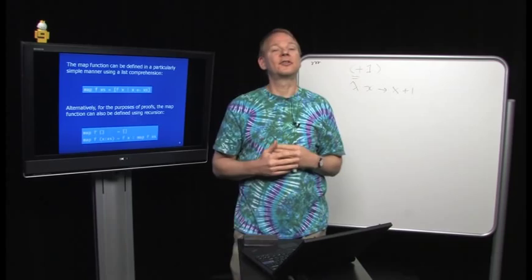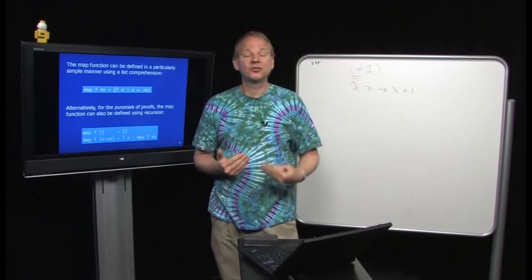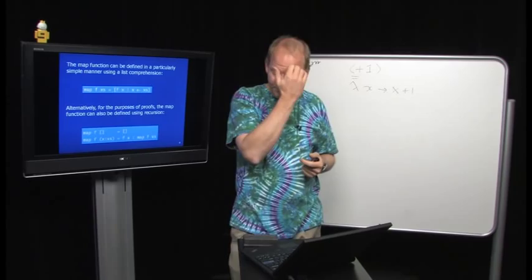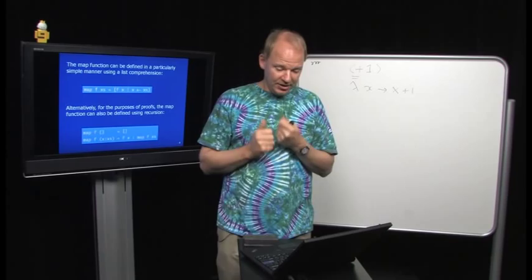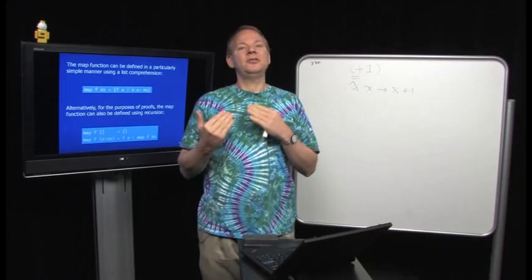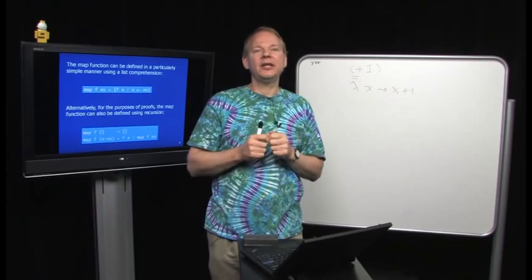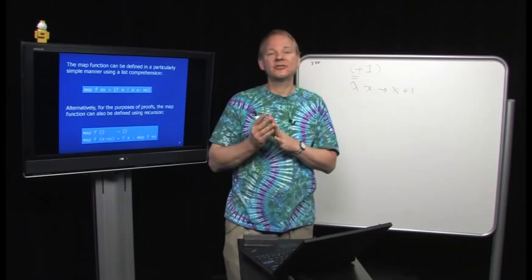The recursive definition: if the list is empty, mapping a function over it returns the empty list. If the list starts with `x` and the rest is `xs`, then `map f (x:xs) = f x : map f xs` — apply f to the head and recursively map f over the tail. The list comprehension definition looks more declarative — you don't specify the order. The recursive one is more operational, explicitly walking left to right through the list.